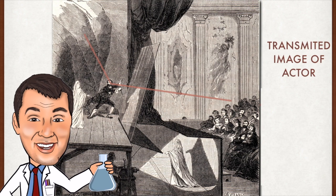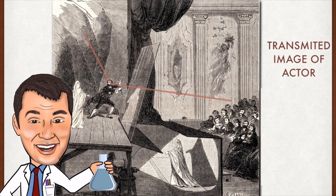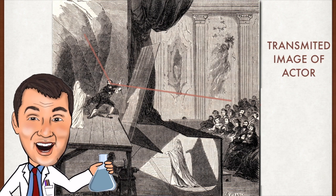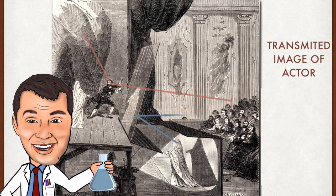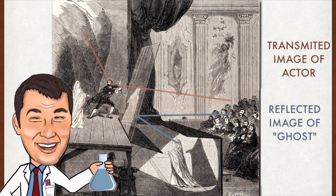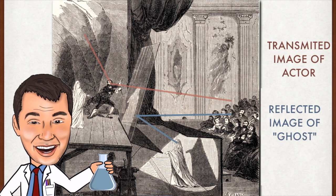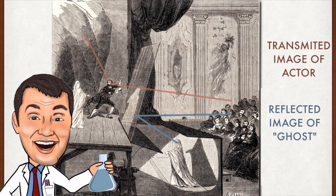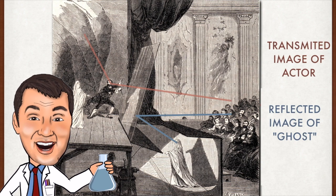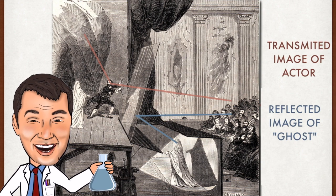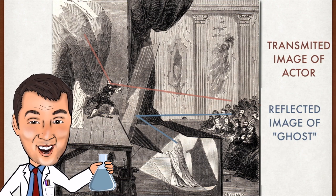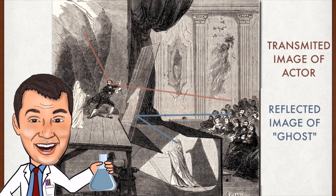Down below the stage, hidden from the audience, is a ghostly figure. And she is brightly lit and what is happening there is that the light from her is bouncing off the top of that glass and into the eyes of the audience. And so therefore the audience sees a combined image, the light which is being transmitted from the stage and the light which is being reflected from below the stage. And therefore they see this translucent figure, this ghost.